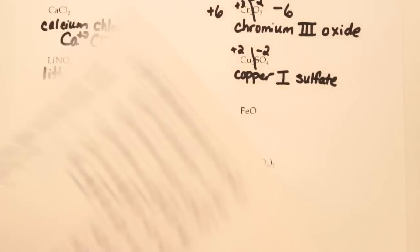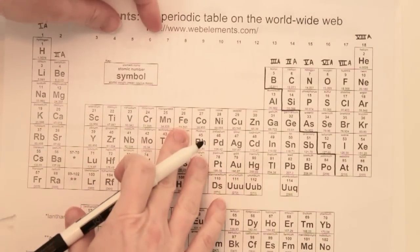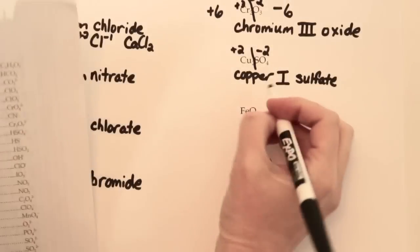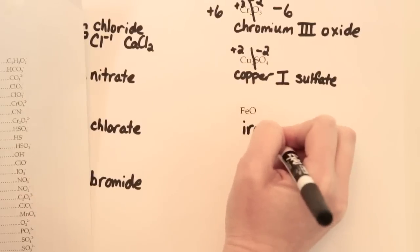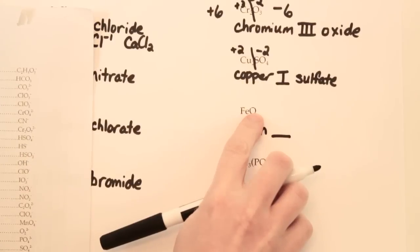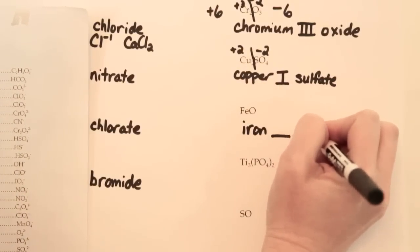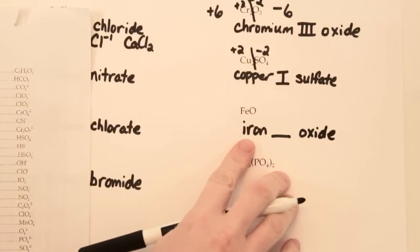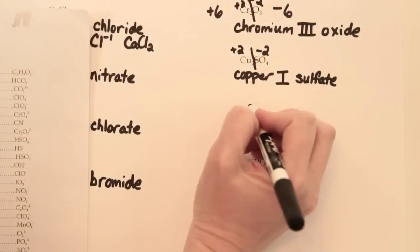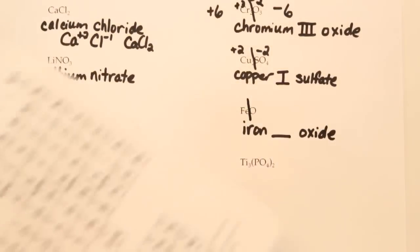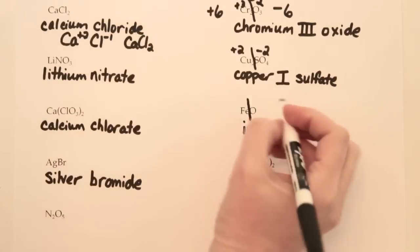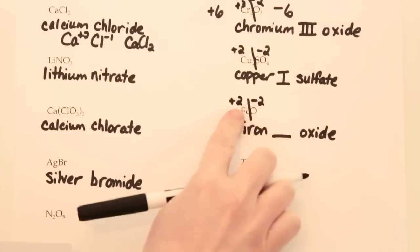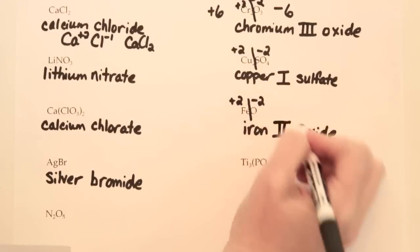FeO — iron is in the middle of the periodic table, so we need a Roman numeral to tell us which kind: iron(II) or iron(III). The O by itself becomes oxide — one type of element. Splitting it down the middle, O by itself has a charge of minus 2, so the iron must balance that with a charge of plus 2. There's only one of each, so this must be iron(II) oxide.